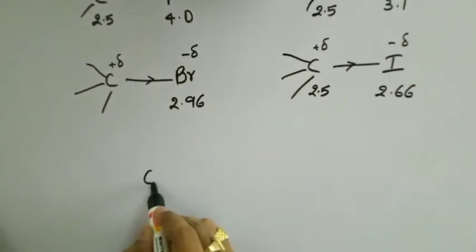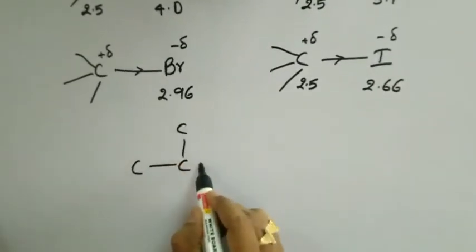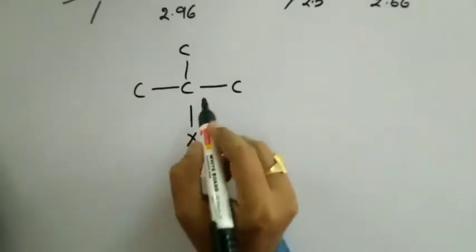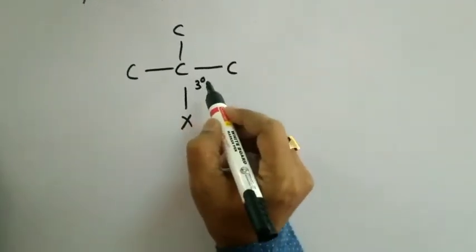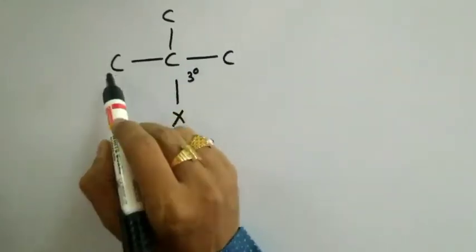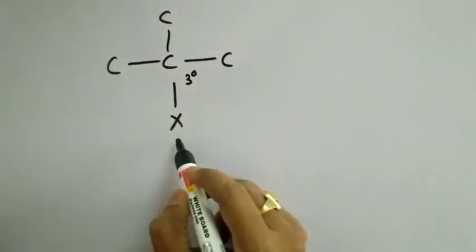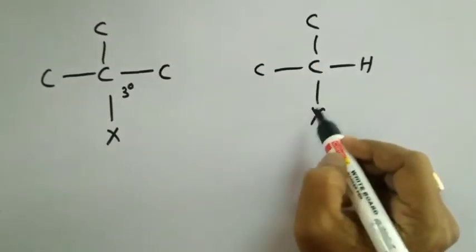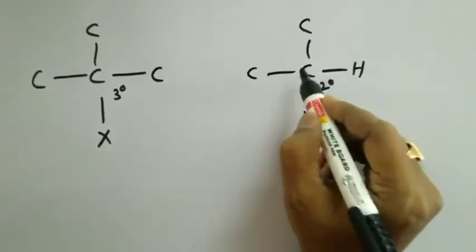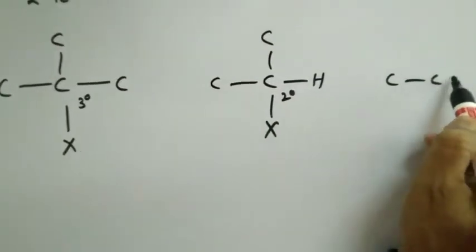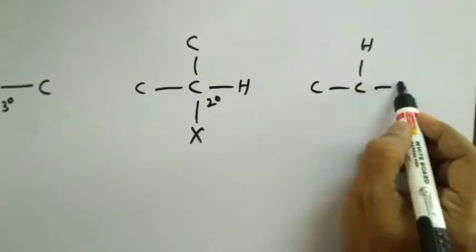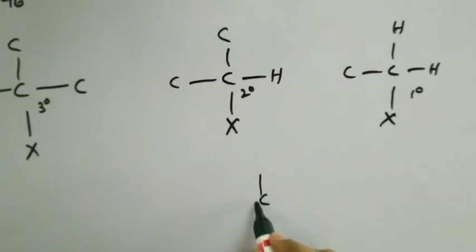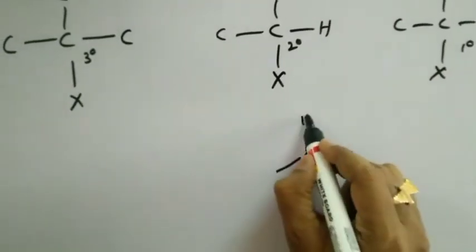Depending upon the carbon to which the halogen atom is attached, alkyl halides are classified into three types. Tertiary alkyl halides have halogen attached to a 3° carbon, which is directly bonded to three other carbons. Secondary alkyl halides have halogen attached to a 2° carbon. Primary alkyl halides have halogen attached to a 1° carbon. There is also the methyl halide.